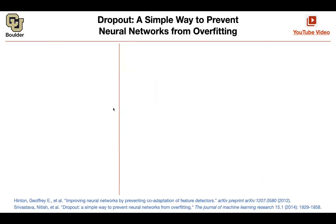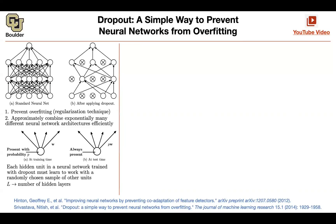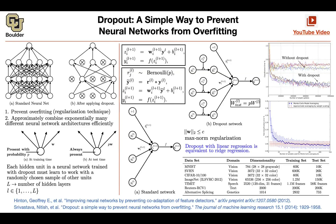Let's move on to dropout. It's the next topic that I asked you to investigate on your own. Any questions about dropout? I just want to make sure of one concept. Is it true that at each time of the forward pass, the nodes to be randomly dropped are reinitialized? Is that correct?